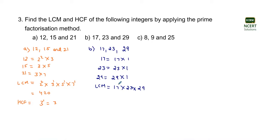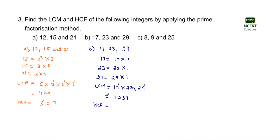Raised to their maximum power — for 17 the maximum power is 1, for 23 it is 1, and for 29 it is also 1. Performing the mathematical calculation of these three terms, the LCM comes out to be equal to 11,339.